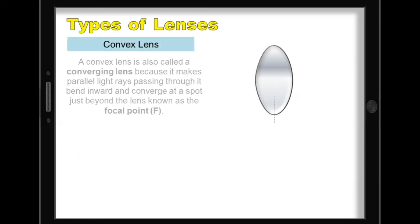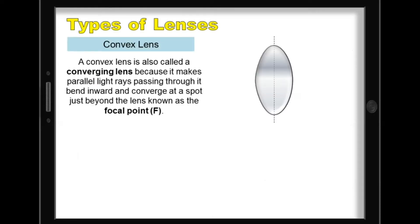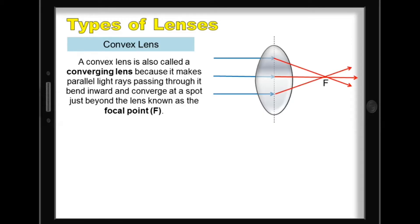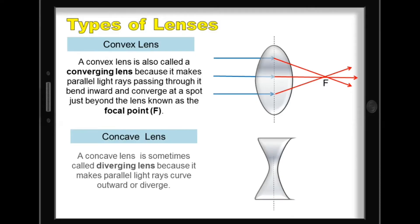In addition, a convex lens is also called a converging lens because it makes parallel light rays passing through it bend inward and converge at a spot just beyond the lens known as the focal point or focus. For concave lens, it is sometimes called a diverging lens because it makes parallel light rays curve outward or diverge.